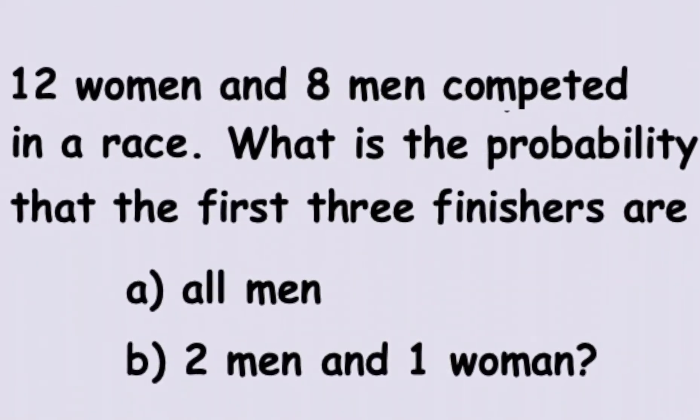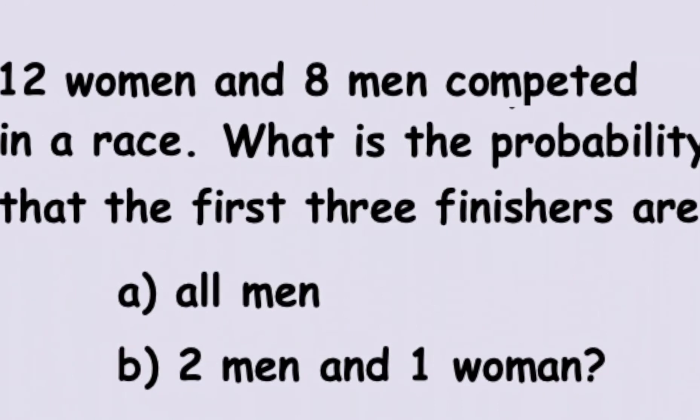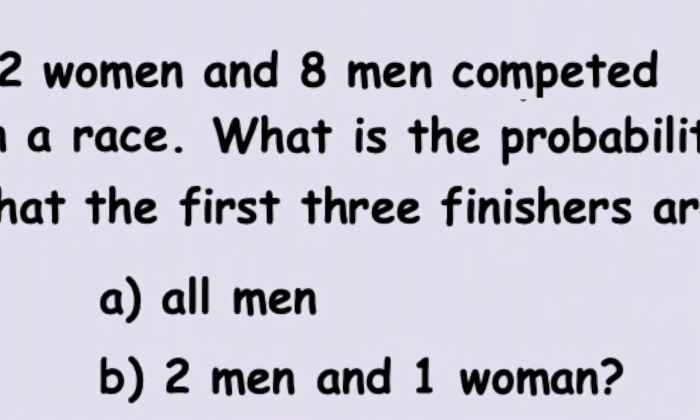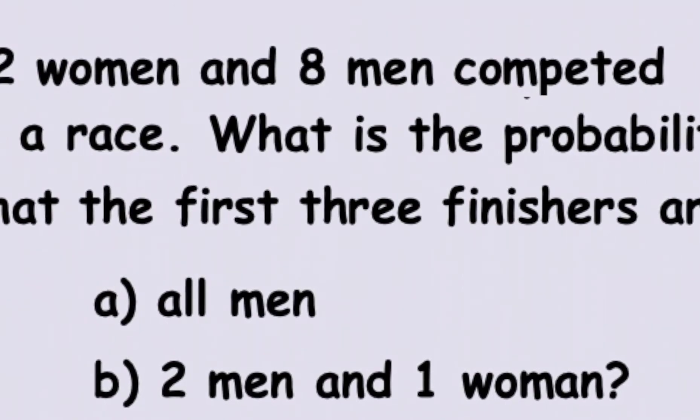So we have 20 people in a race, 12 women and 8 men, and we have to find the probability that the top three finishers are all men.